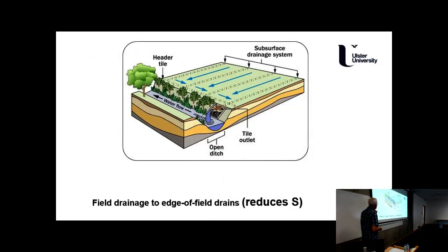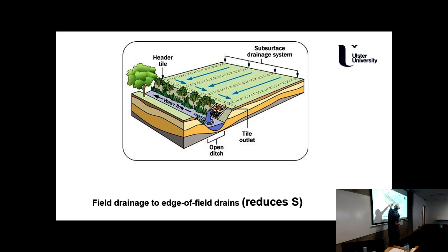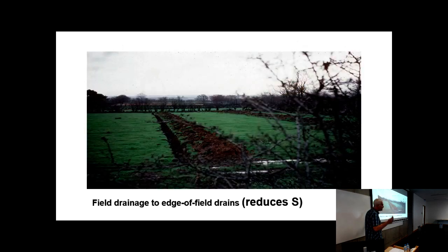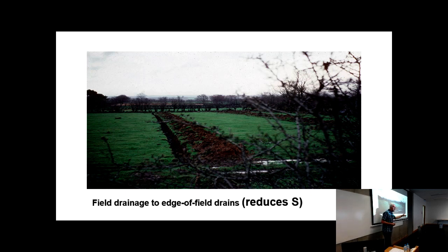The principal reason for channel modification is to reduce soil water from agricultural land — to dry it out a little bit and increase the chances for agricultural production. So we're moving water from one place to another. Once we've deepened those channels, we've put in things like subsurface drainage, tile drains, going into ditches, then into rivers that have been modified to accommodate that drainage. Field drainage to edge-of-field drains reduces S — in the water balance equation, S becomes a smaller number.